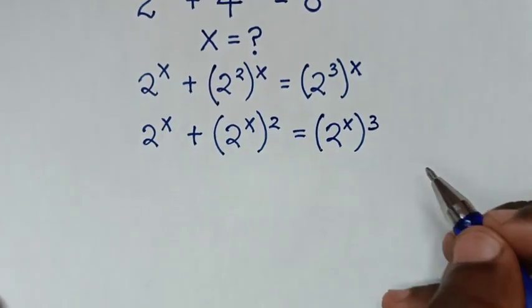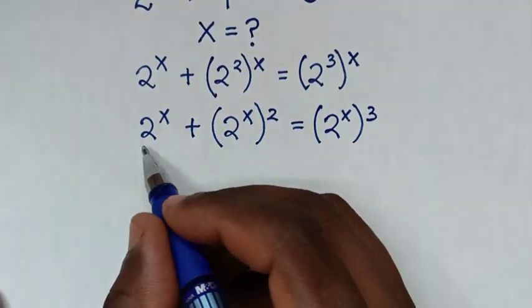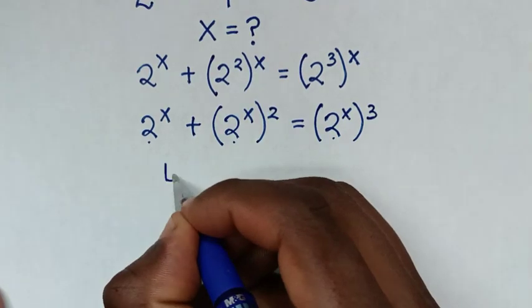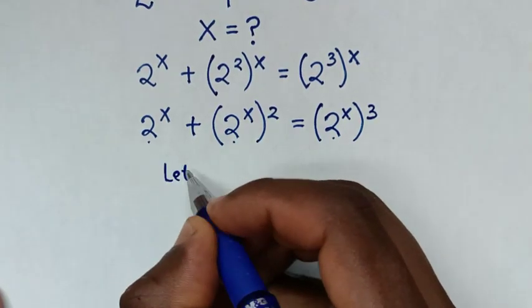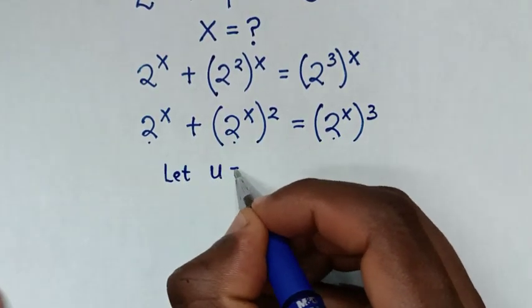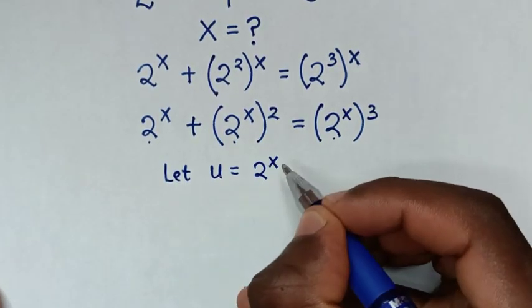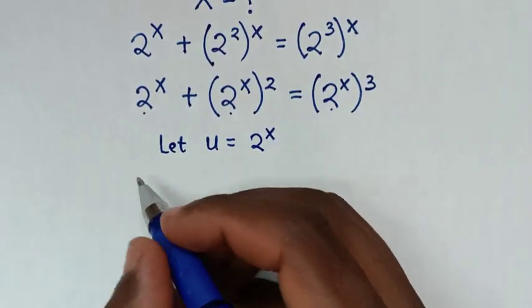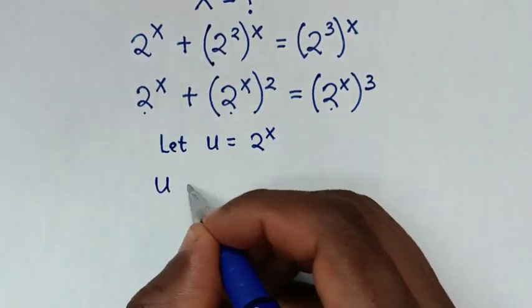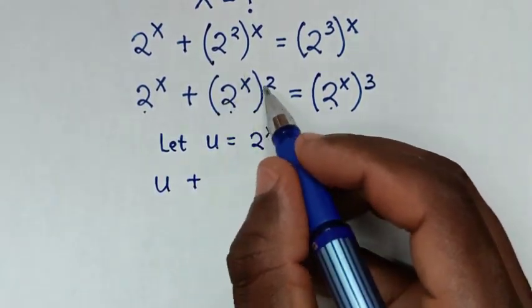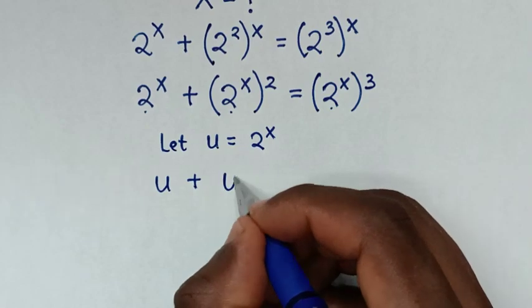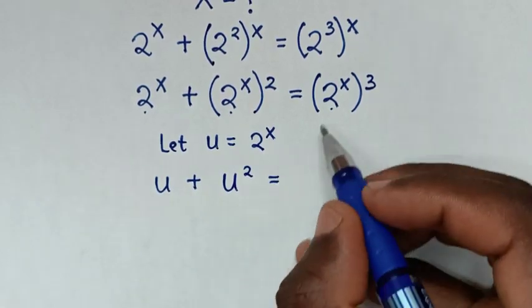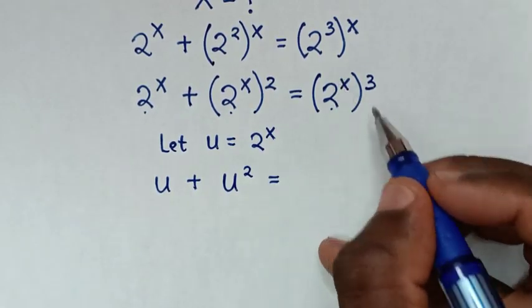In the next step, 2 power x is common throughout, so we let u equal to 2 power x. The equation becomes u plus u squared is equal to u power 3.